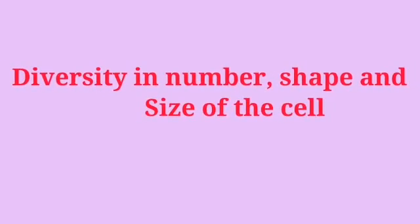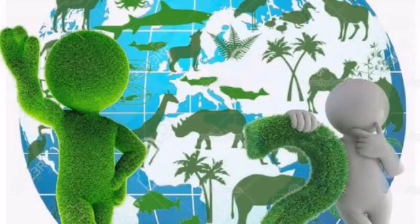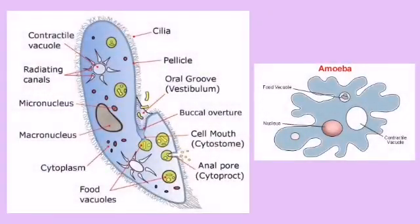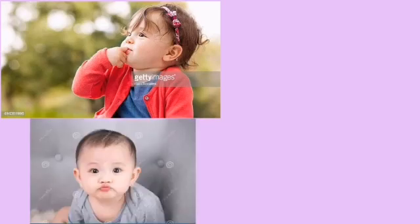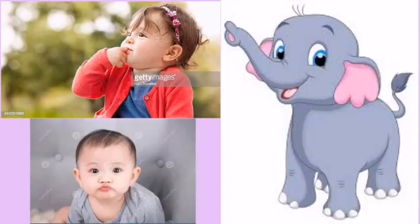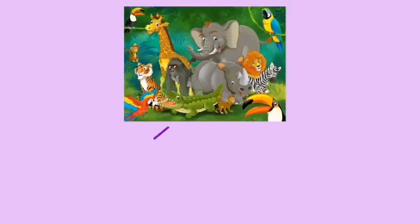Now we move to the last topic of lecture one, that is diversity in number, shape, and size of cell. On this earth there are different forms of organisms ranging from one-celled organism to many-celled organisms. Thus on the basis of number of cells present in an organism, we can classify the organism into unicellular and multicellular organism.